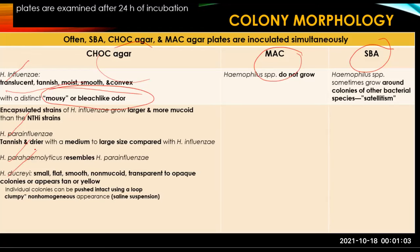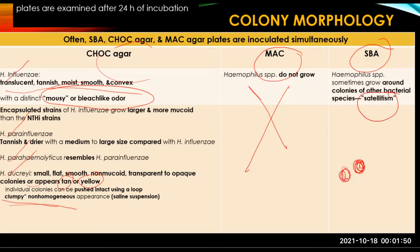H. ducreyi appears as small, flat, smooth, non-mucoid, transparent to opaque colonies — appearing tannish or yellow. The individual colonies can be pushed intact using a loop, giving a clumpy non-homogeneous appearance in saline suspension. Haemophilus species do not grow on MAC agar. On SBA, they sometimes grow around colonies via satellitism — for example, growing around Staph aureus colonies. Key things to remember: the mousy-like odor and the phenomenon of satellitism.